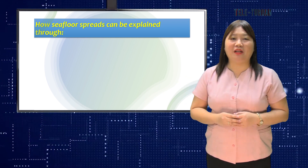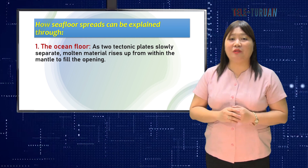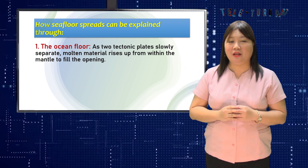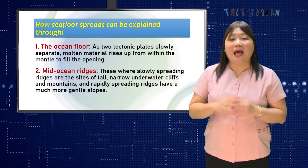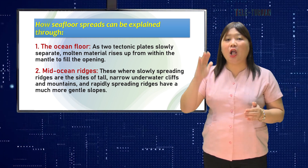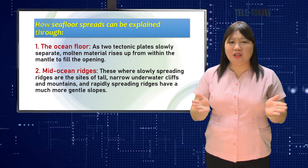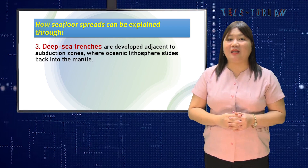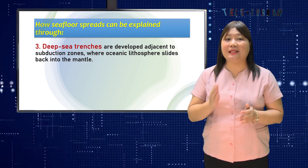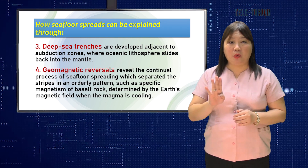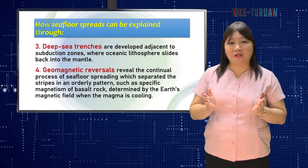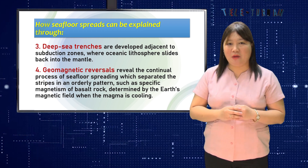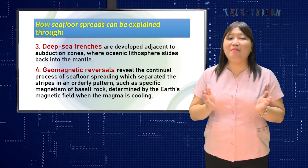To sum up, how seafloor spreads can be explained through: one, the ocean floor — as two tectonic plates slowly separate, molten material rises up from within the mantle to fill the opening; two, mid-ocean ridges — slowly spreading ridges are sites of tall, narrow underwater cliffs and mountains, while rapidly spreading ridges have much gentler slopes; three, deep sea trenches — developed adjacent to subduction zones where oceanic lithosphere slides back into the mantle; and four, geomagnetic reversals — which revealed the continual process of seafloor spreading, separating magnetic stripes in an orderly pattern determined by Earth's magnetic field as the magma cools.